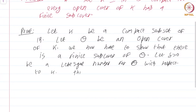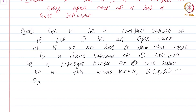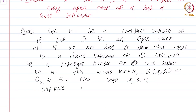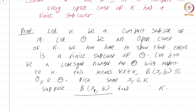This means: for all x in K, B(x, delta) is a subset of some O_x, which is an element of O. This is the definition of a Lebesgue number. How does this help us? Well, pick some x_1 in K. There are two possibilities: either this single open ball B(x_1, delta) contains K, or it does not. We are assuming that this single ball does not contain K.